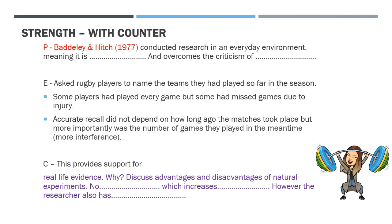The second strength, again with a counter: Baddeley and Hitch conducted research in an everyday environment — meaning it has high ecological validity and overcomes the criticism of low ecological validity in lab studies. The study asked rugby players to name teams they had played in a season; accurate recall didn't depend on how long ago matches took place, but on how many games were played in between. This supports interference as an explanation. It is a natural experiment — which is a strength — but counter-argue: what are the disadvantages of a natural experiment? What control haven't we got, and how does that affect the findings?